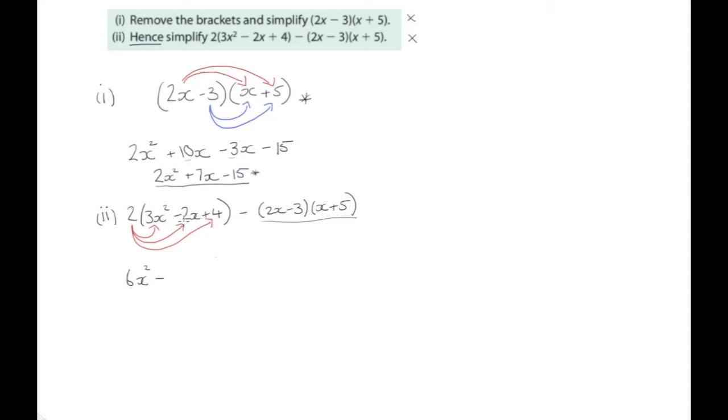And then 2 multiplied by minus 2x. 2 by 2 is 4, and remember the minus stays the same, so minus 4x. And then 2 by 4, that's just 2 by 4 is 8, plus 8.